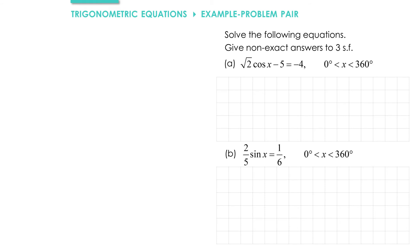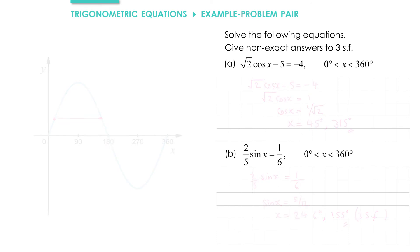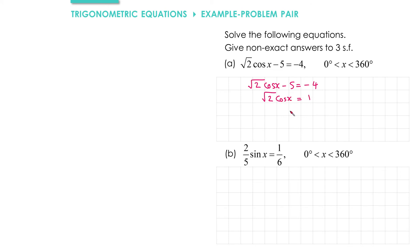Welcome back — here's my solution. If you got it right, well done. If you didn't, I'm going to go through how I got my solution. To begin with, we want to rearrange to get cos x on its own. Adding 5 to both sides gives root 2 cos x equals 1, and then dividing through by root 2 gives cos x equals one over root 2. You can either do inverse cos of one over root 2, or spot the exact value: x equals 45 degrees.